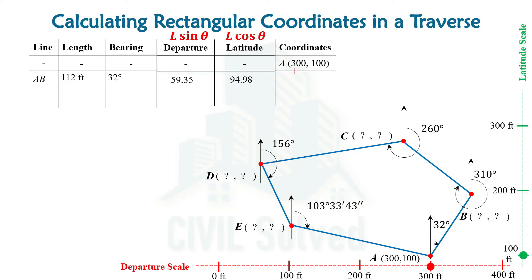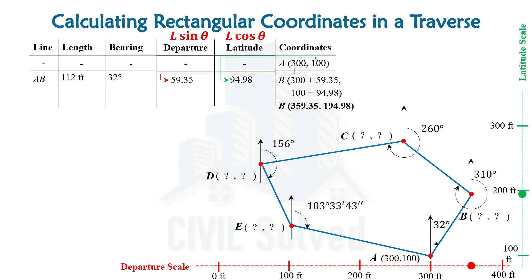So on adding these values, we will be having the coordinates of point B. Ultimately we will be having the coordinates of point B, and the same can be shown with the help of this scale by the movement of the green and red dots.